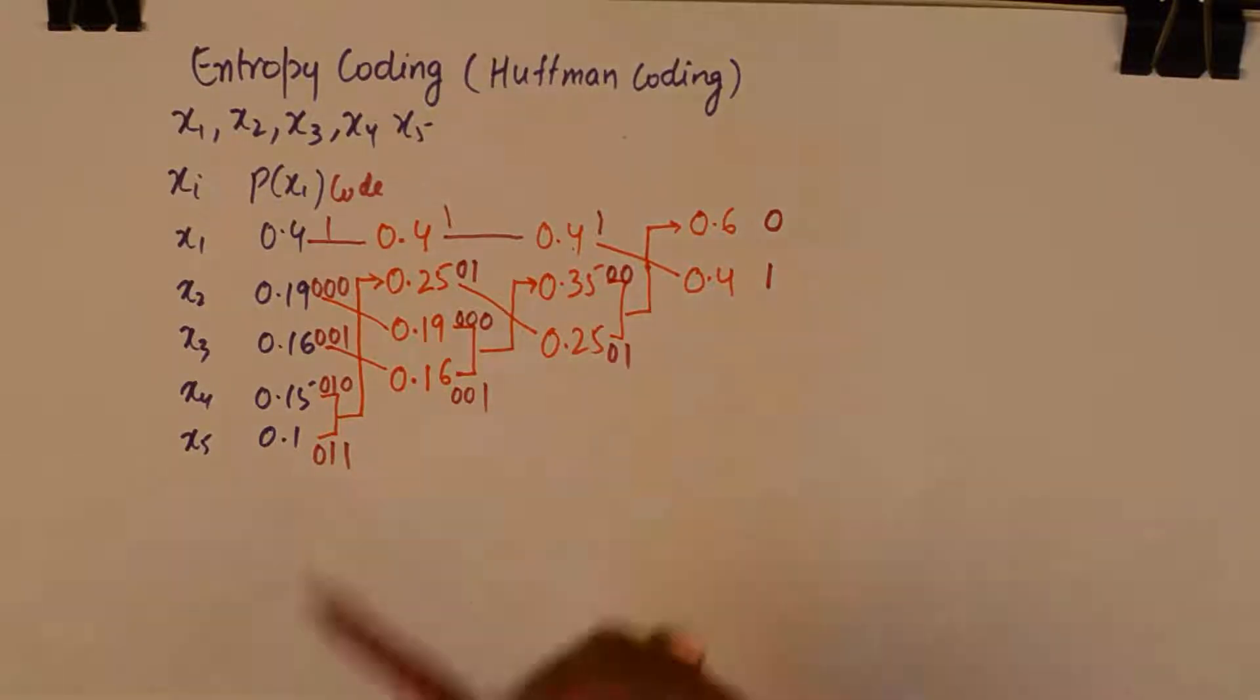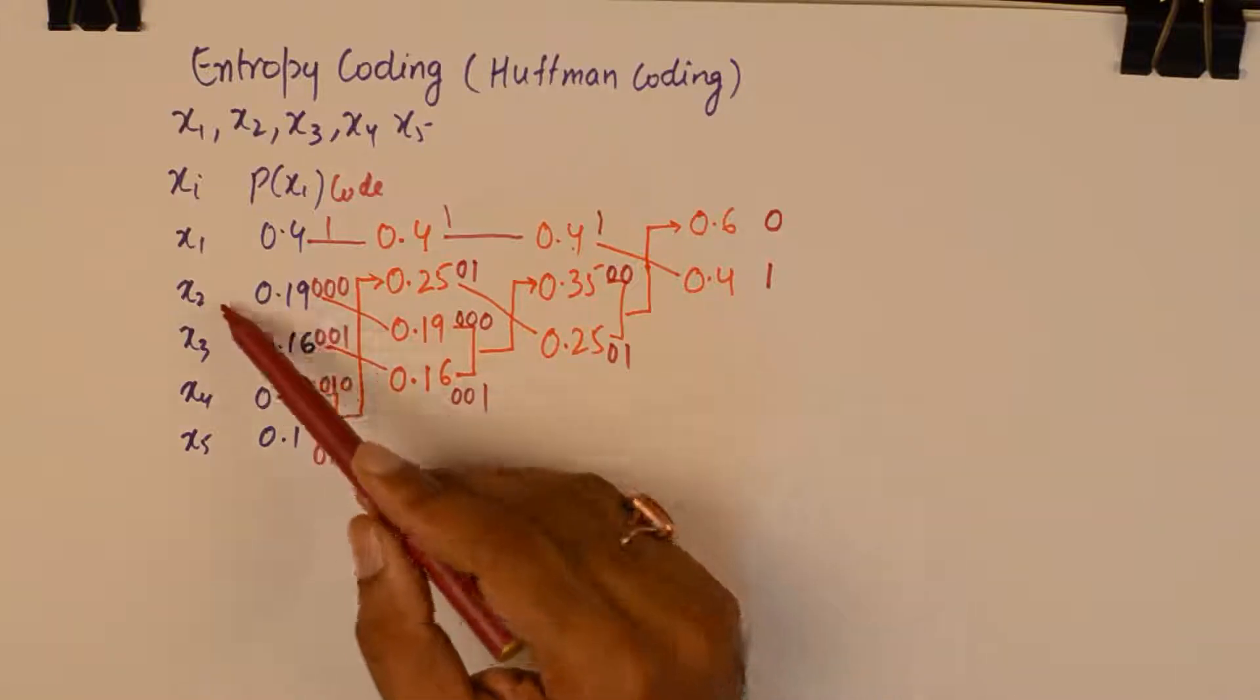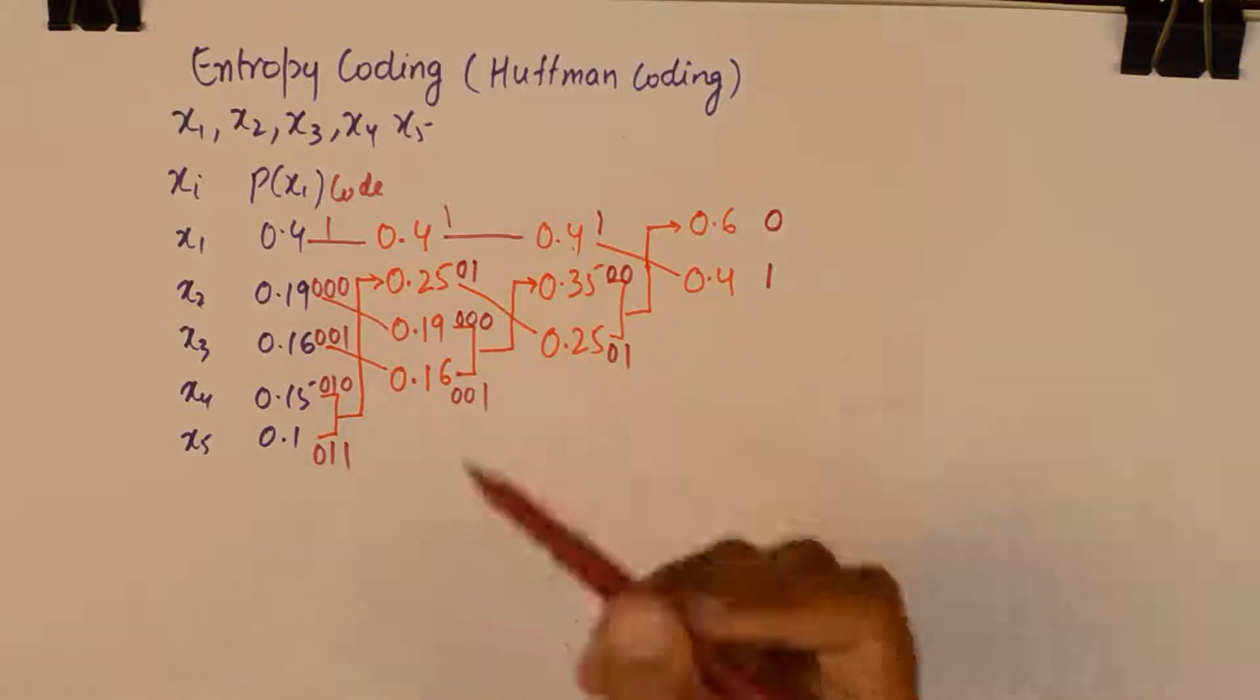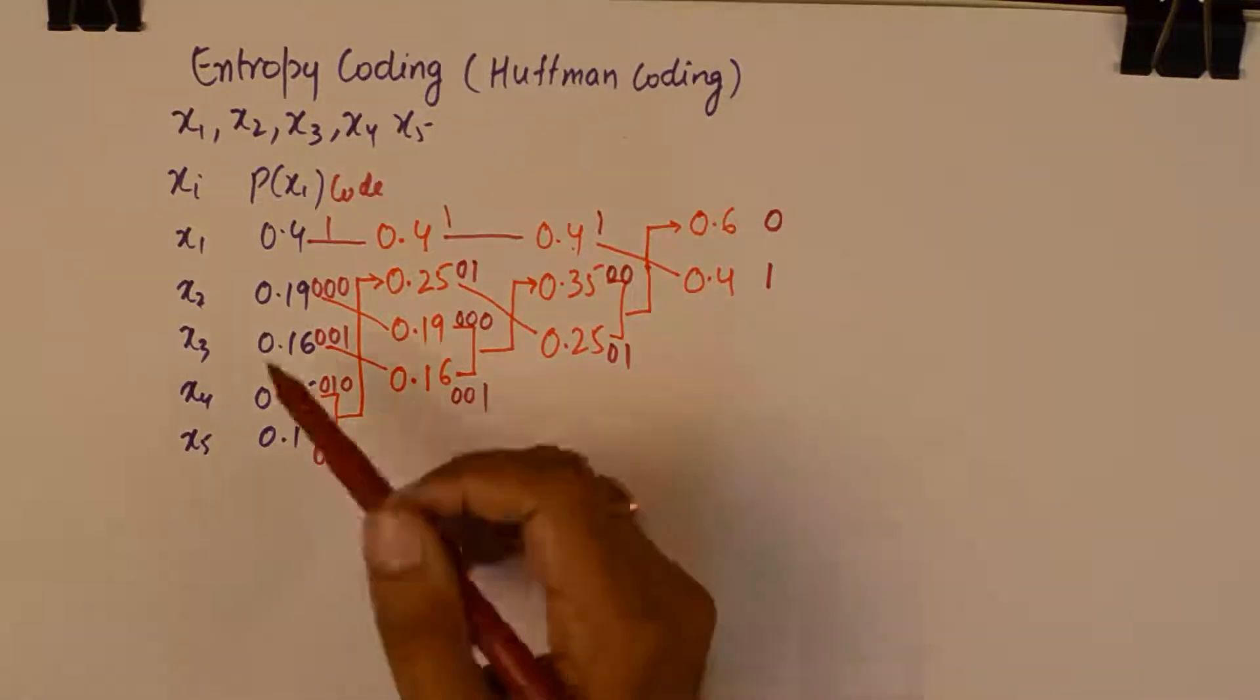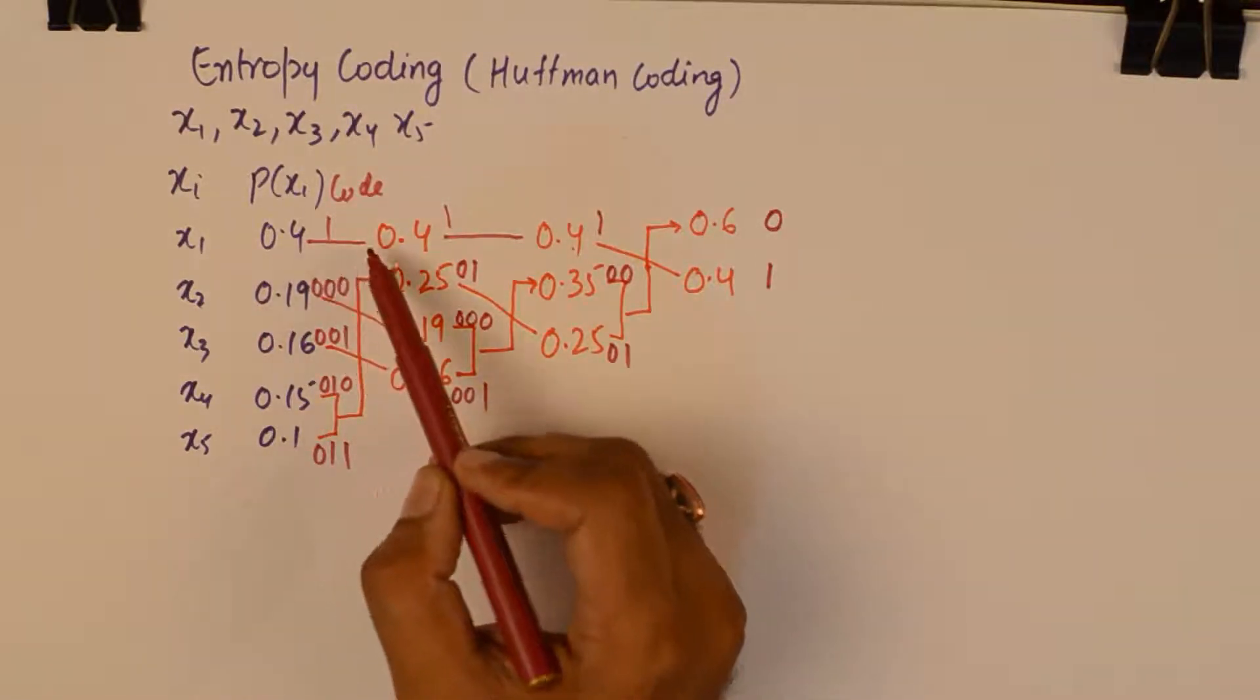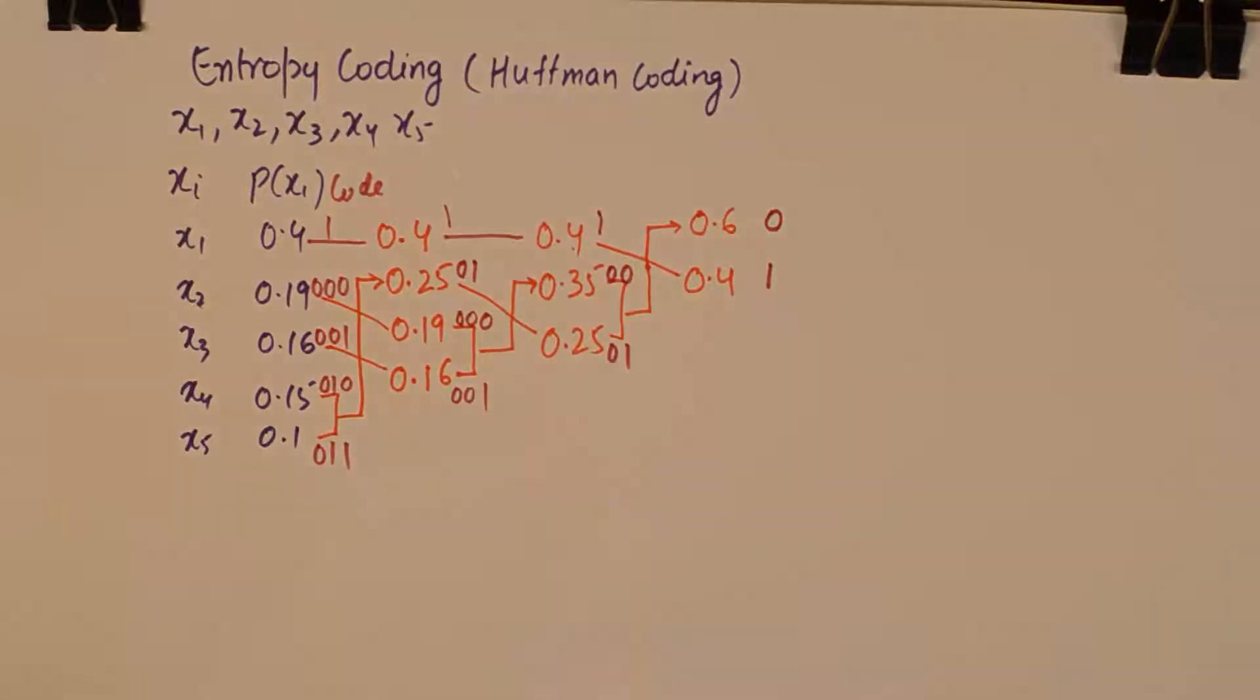So this has assigned the symbol with the probability of 0.19 to a code which is 0 0 0 and so on. And the highest probability of 0.4 which is almost the half is assigned to the code 1. Now this is a little different to what we got in Shannon-Fano.